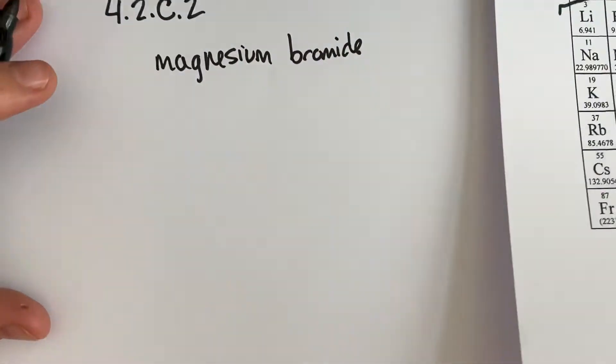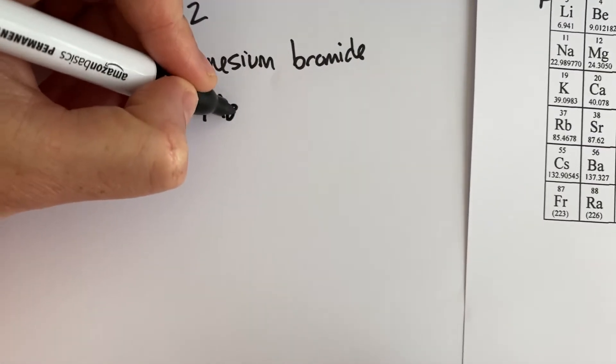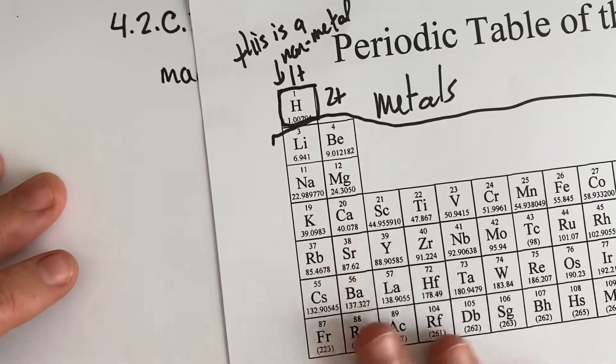Well, magnesium is Mg, and don't get it confused with manganese, which is Mn. So magnesium is right there. You know the charge of it because it's in the two-plus column.